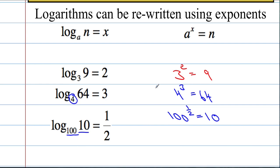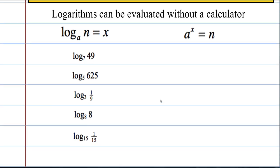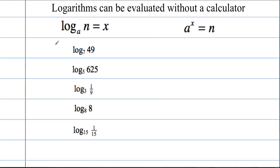That wasn't too bad. Let's see what happens now when we have to evaluate these logarithms without a calculator. So log to the base 7 of 49, what's that going to equal to? So what power of 7 gives me an answer of 49? It must be 2. Because 7 to the power of 2 equals 49.